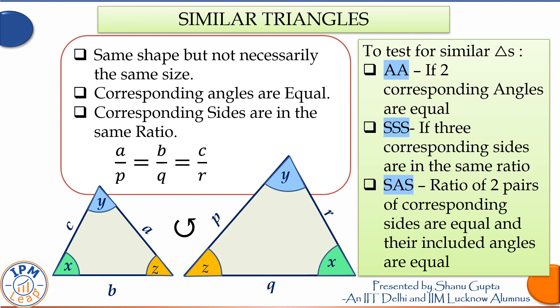Similar triangles, as we all know, are two triangles which have the same shape but not necessarily the same size. A sure shot way to test if two triangles are similar is if you find any two angles equal in the respective figures.